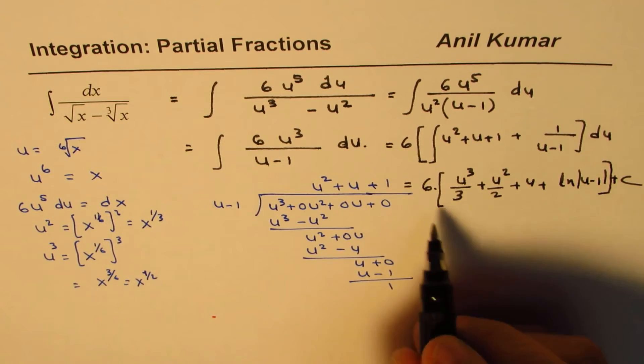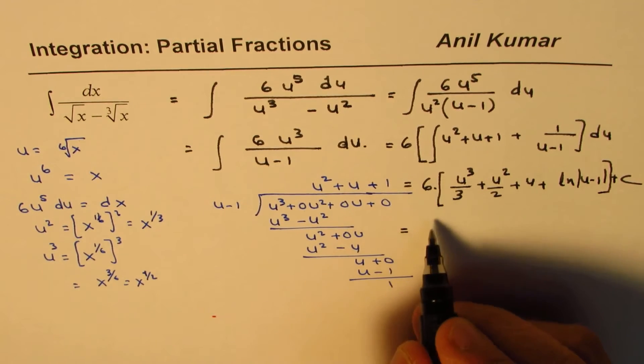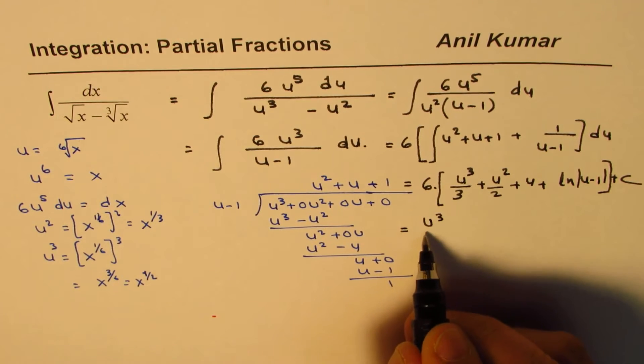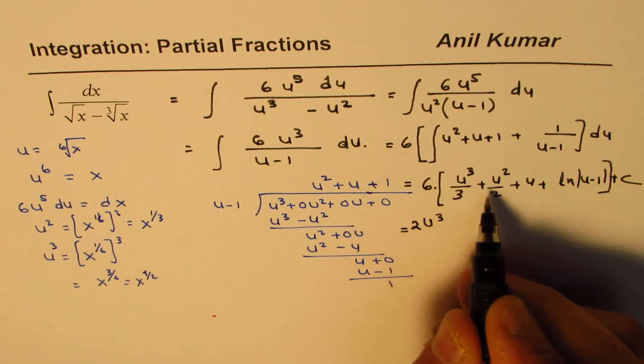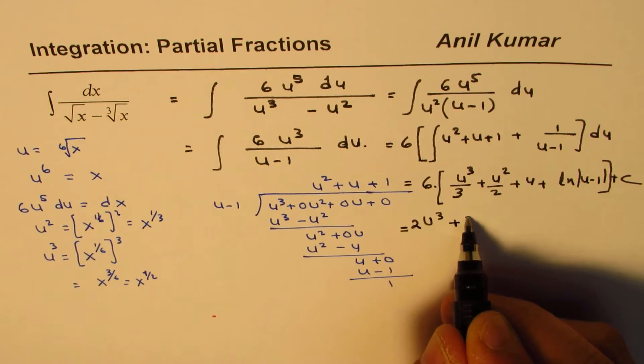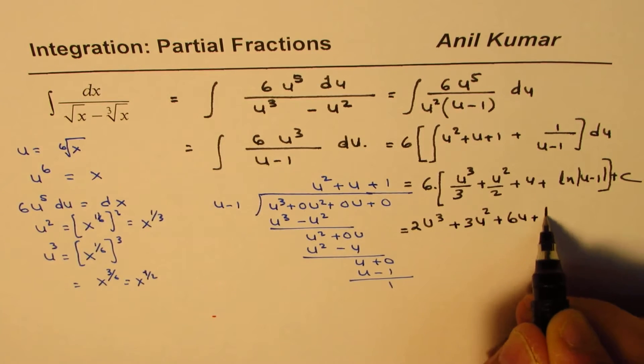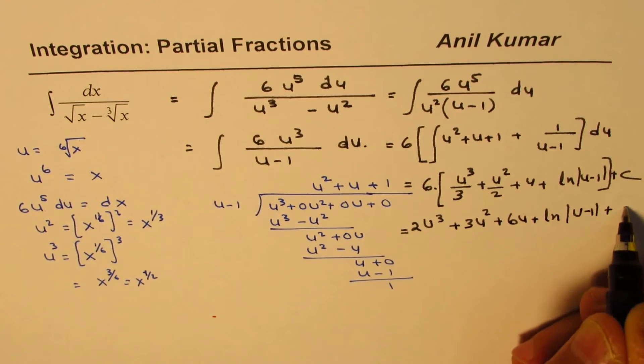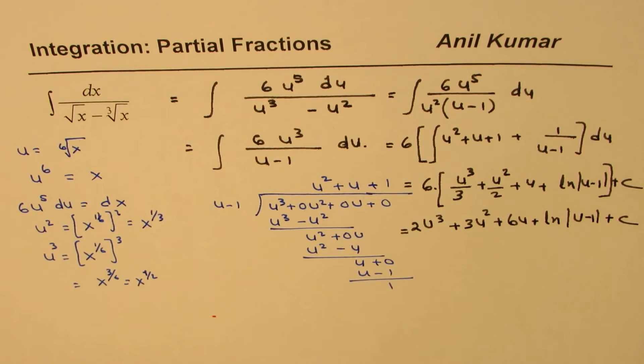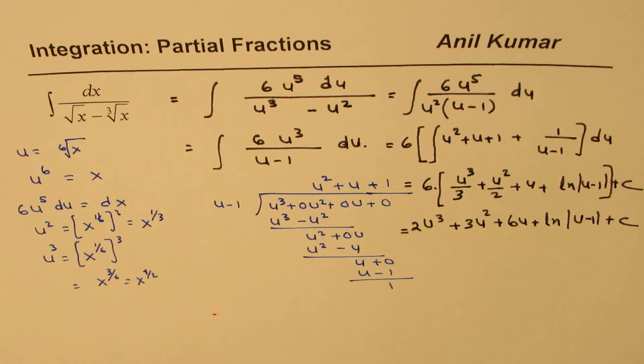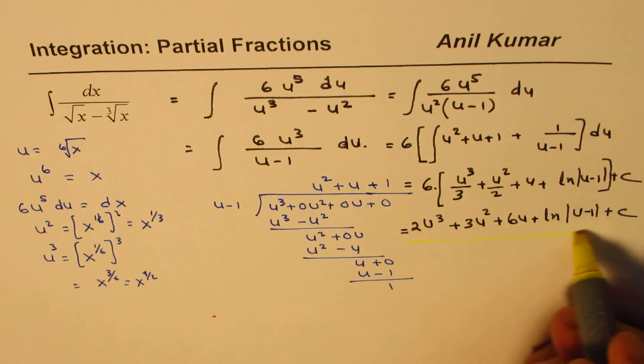So anyway, so this is 6. So let's open this bracket up. So we have u cube, I mean 2 u cube. And here we have plus 3 u square plus 6 u plus ln u minus 1 plus c. So that becomes the solution for the given question. So this is the solution for us.